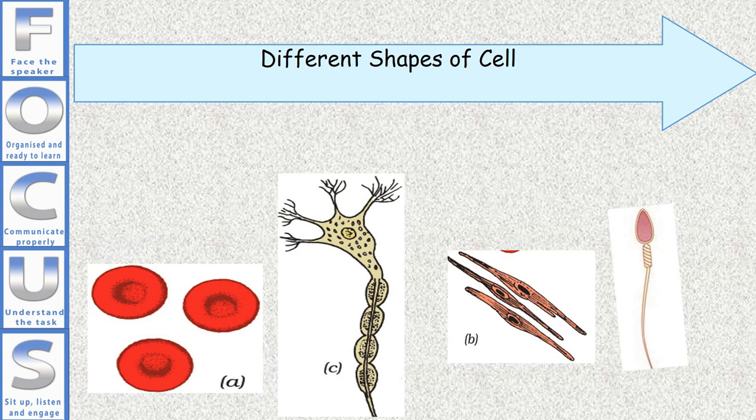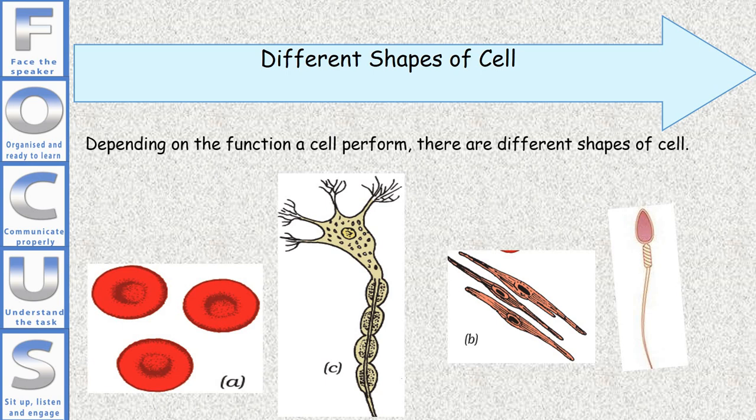Different shapes of cell. Depending on the function a cell performs, there are different shapes of cells. Generally, cells are round, elongated, or spherical.